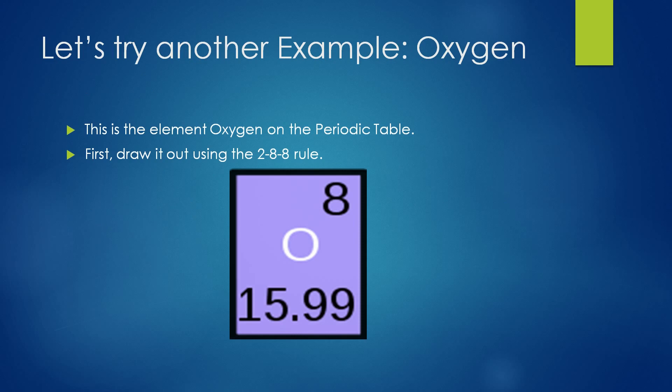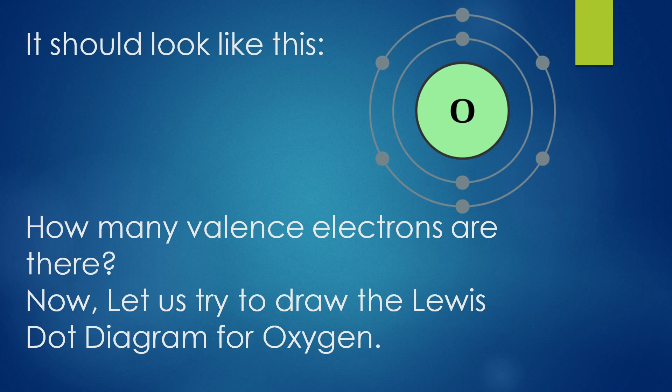Let us try another example: oxygen. This is the element oxygen on the periodic table. First, draw it out using the 2-8-8 rule. It should look like this. How many valence electrons are there? Look at the picture.